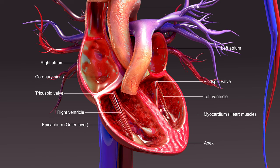Now let's delve deeper into the structure of the heart. The image here shows a cross-sectional view, illustrating the three layers that compose the heart wall. From the outermost to the innermost layer, we have the epicardium, myocardium, and endocardium. The epicardium is the thin, protective layer, while the myocardium is the thick, muscular layer responsible for the heart's contractions. Finally, the endocardium is a thin, smooth layer that lines the inner chambers and valves.